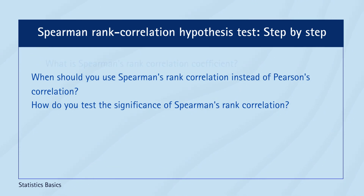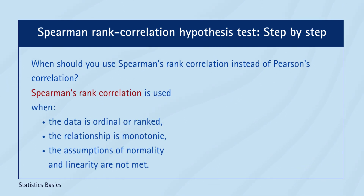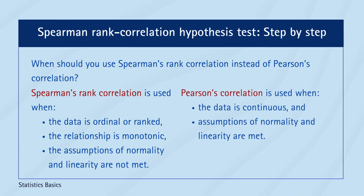Spearman's Rank Correlation is used when the data is ordinal or ranked, the relationship is monotonic, and the assumptions of normality and linearity are not met. Pearson's Correlation is used when the data is continuous and the assumptions of normality and linearity are met.